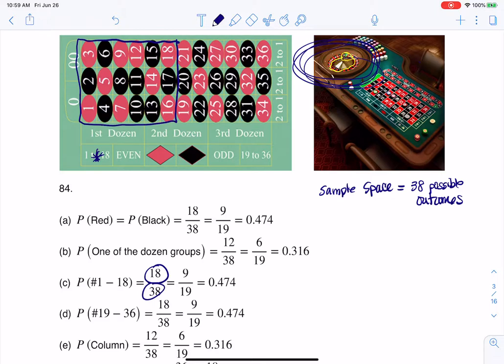Alright, and that's going to be the same thing for part D. If I put my chip here and bet on 19 to 36, there's an 18 out of 38 chance that I'll get paid.